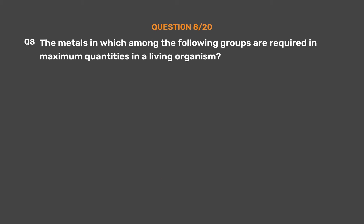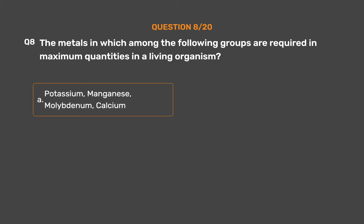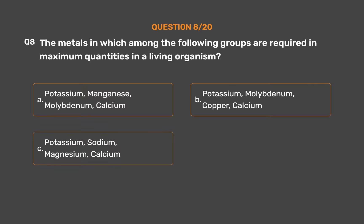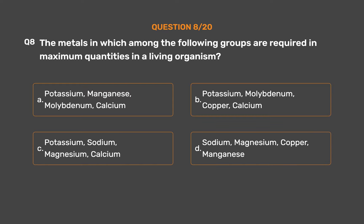Question No. 8. The metals in which among the following groups are required in maximum quantities in a living organism? Option A: Potassium, manganese, molybdenum, calcium. Option B: Potassium, molybdenum, copper, calcium. Option C: Potassium, sodium, magnesium, calcium. Option D: Sodium, magnesium, copper, manganese. The correct answer is Option C: Potassium, sodium, magnesium, calcium.